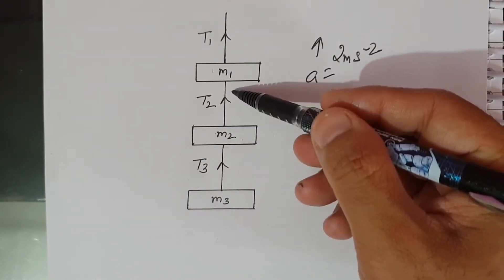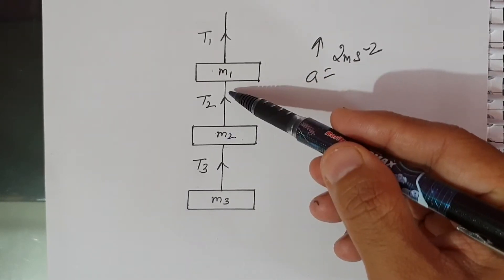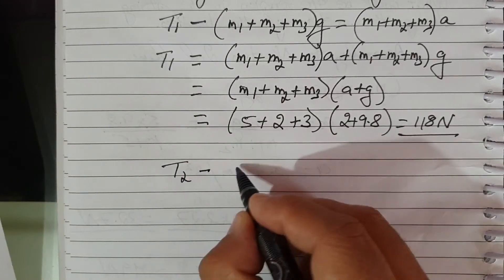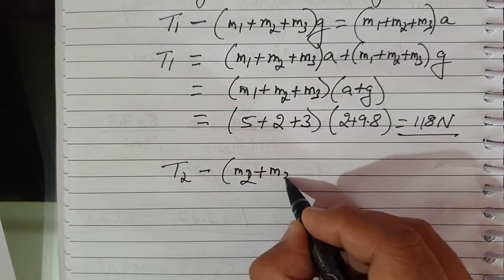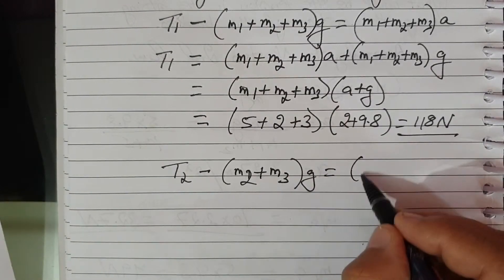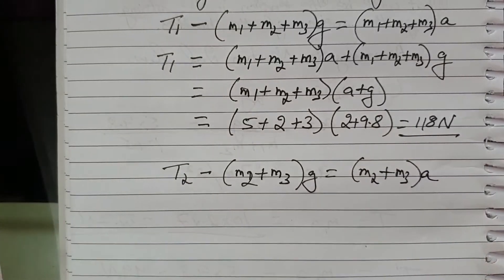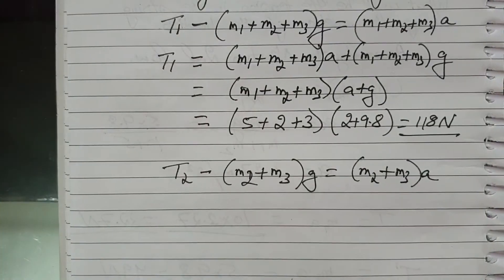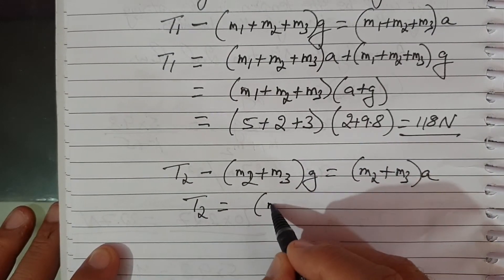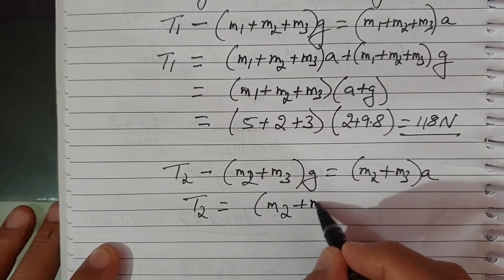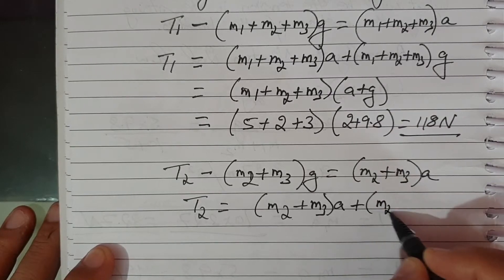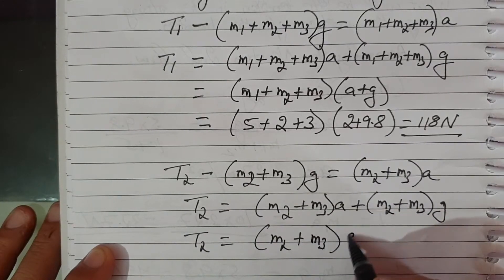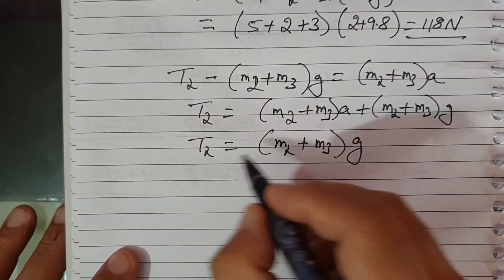For tension T2, considering the subsystem of M2 and M3: T2 − (M2 + M3)G = (M2 + M3)A. Therefore T2 = (M2 + M3)(A + G) = (2 + 3)(2 + 9.8) = 5 × 11.8 = 59 N.